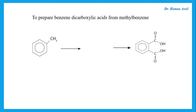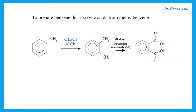To prepare benzene dicarboxylic acid from methylbenzene: looking at the product, there is an extra methyl group on the neighbouring carbon of the benzene ring. We can add methyl chloride in the presence of aluminium chloride to add another methyl group to the ring. Then, to change the methyl groups to carboxylic acid groups, we use alkaline potassium permanganate, which oxidises both methyl groups to form two carboxylic acids.